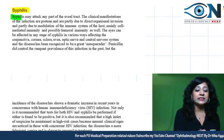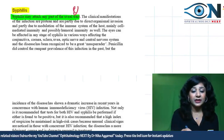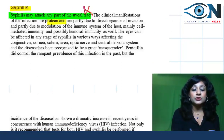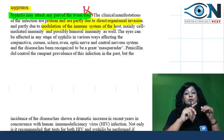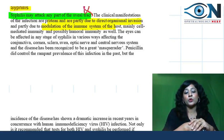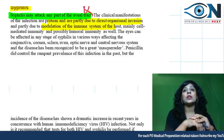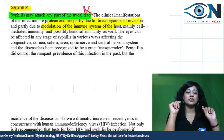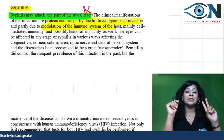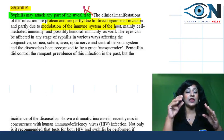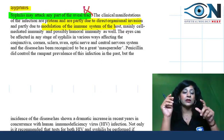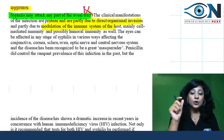A very important point, just as with tuberculosis: syphilis can attack any part of the uveal tract. The clinical manifestations are protean and partly due to direct organism invasion and partly due to modulation of the immune system — both cell-mediated as well as humoral immunity. These are aspects that could be asked in medicine, microbiology, and ophthalmology questions.